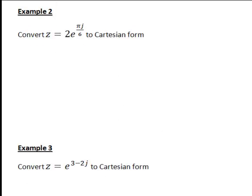For a second example, now let's write z equals 2 e to the πj on 6 in Cartesian form. So once again, this has the form r e to the jθ, where here then r in this case is equal to 2 and θ in this example is π on 6.